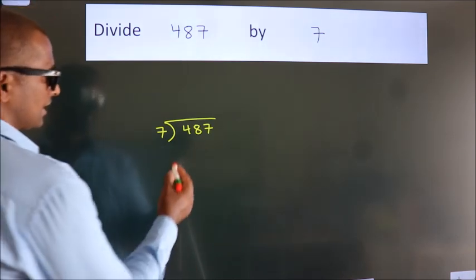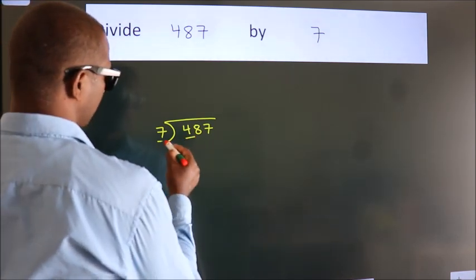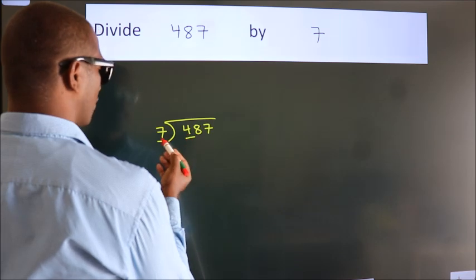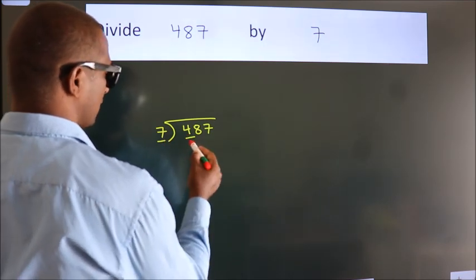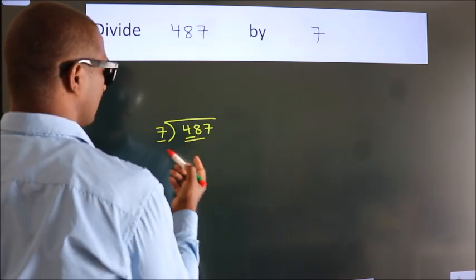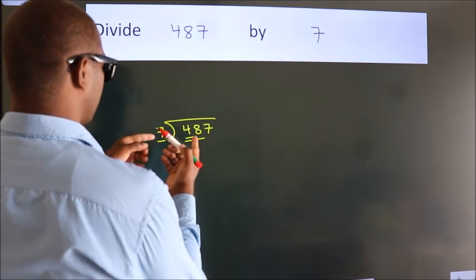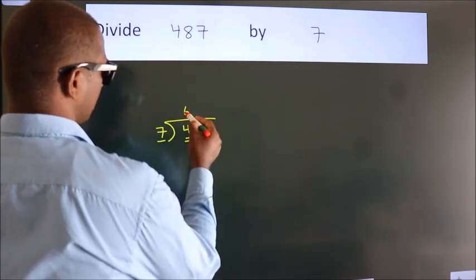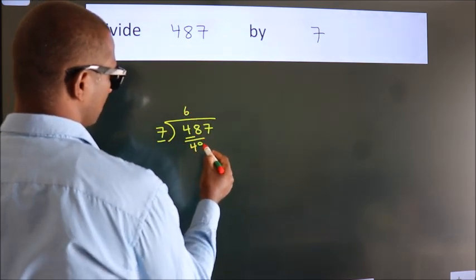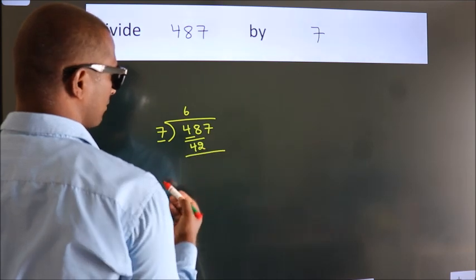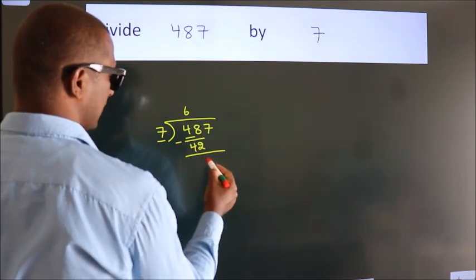Next, here we have 4, here 7. 4 is smaller than 7, so we should take two numbers, that's 48. A number close to 48 in the 7 table is 7 times 6, 42. Now we should subtract, we get 6.